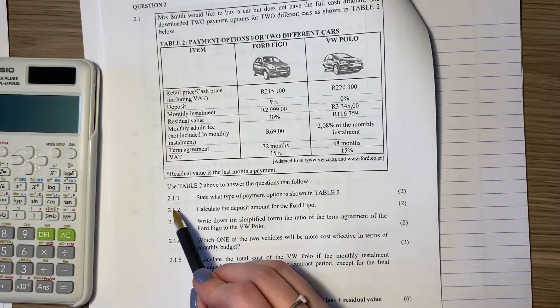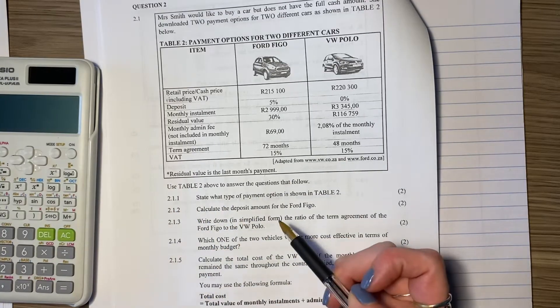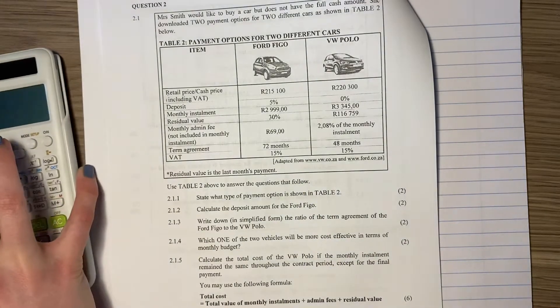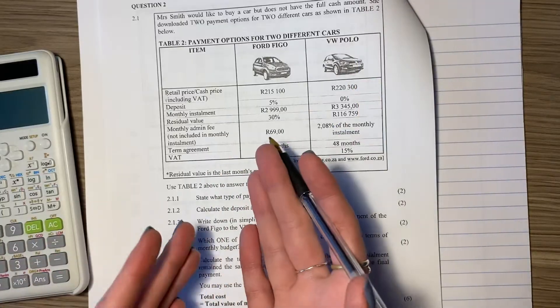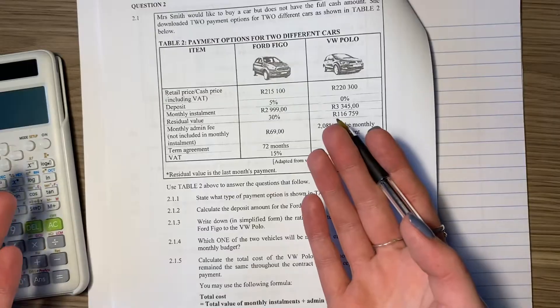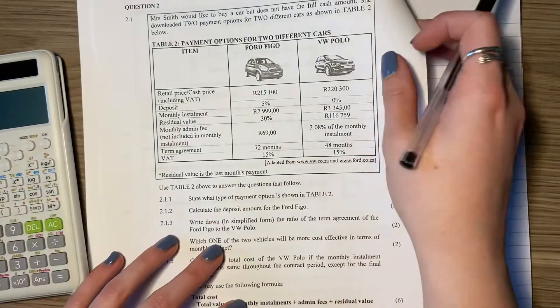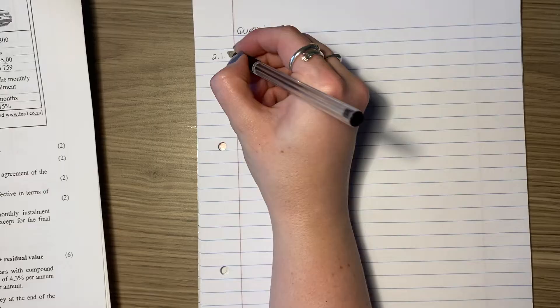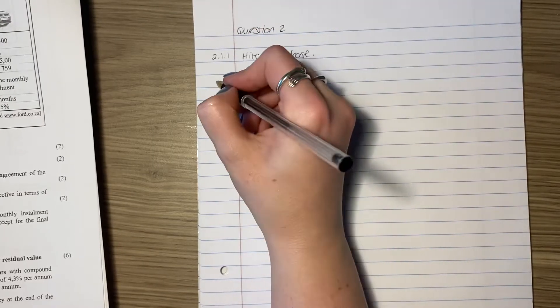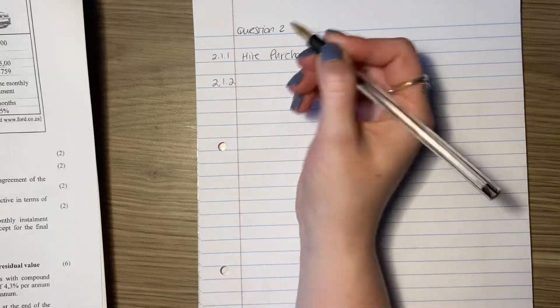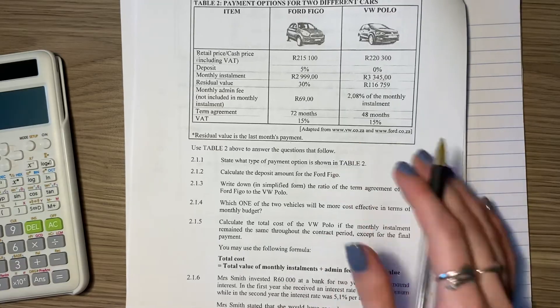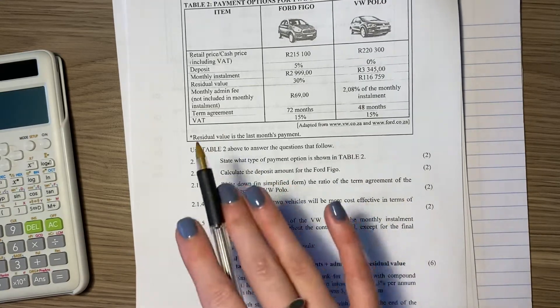2.1.1 says state what type of payment option is shown in table two. So now this is one that students often are like, wait, so it's just a hire purchase. You could say hire purchase, you could say it's a balloon payment, but I would just say hire purchase. There's lots of different things in the memo, but the one I think is most obvious is hire purchase. You don't have to write miles and miles of different options. You just have to write one, because remember, one point gives you two marks when it comes to these sort of state questions.